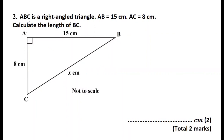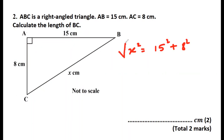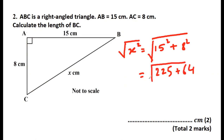Moving to the next question. It says ABC is a right-angled triangle, AB is equal to 15 centimeters, AC is equal to 8 centimeters. Calculate the length of BC. Again, we can see the longest side is missing, so the answer we are expecting is going to be bigger than both 15 and 8. So using the Pythagoras theorem, x squared will be equal to 15 squared plus 8 squared. We square root both sides. 15 squared is 225 and 8 squared is 64. Adding both of these gives us 289. The square root of 289 is 17. So the value of x is 17 centimeters.